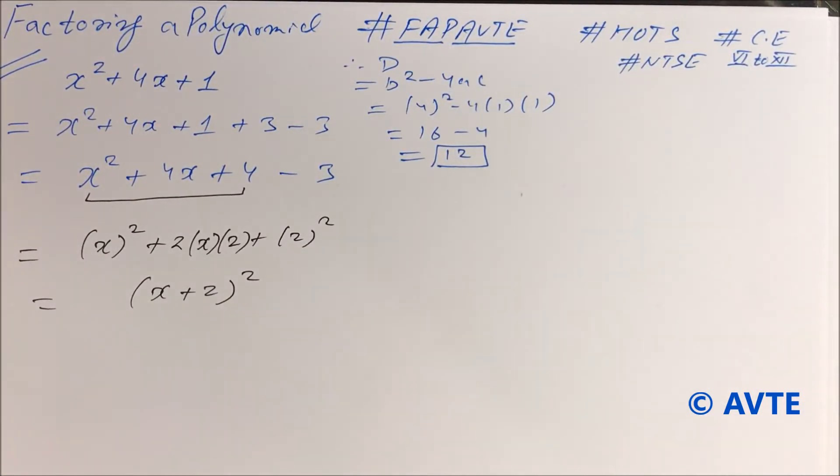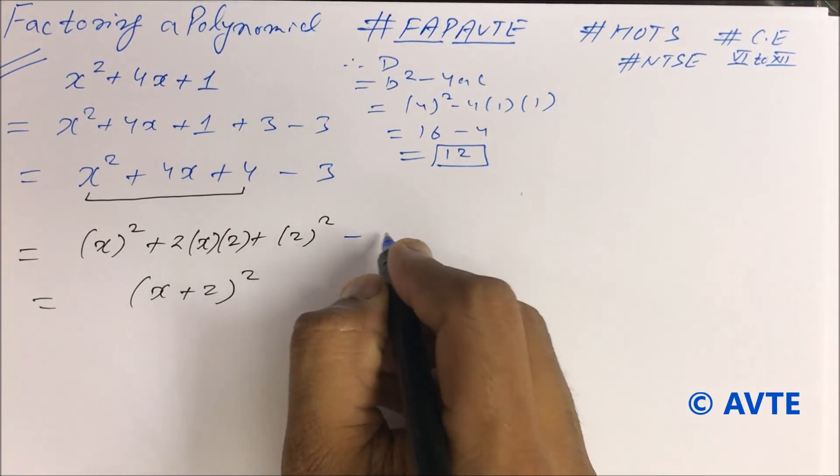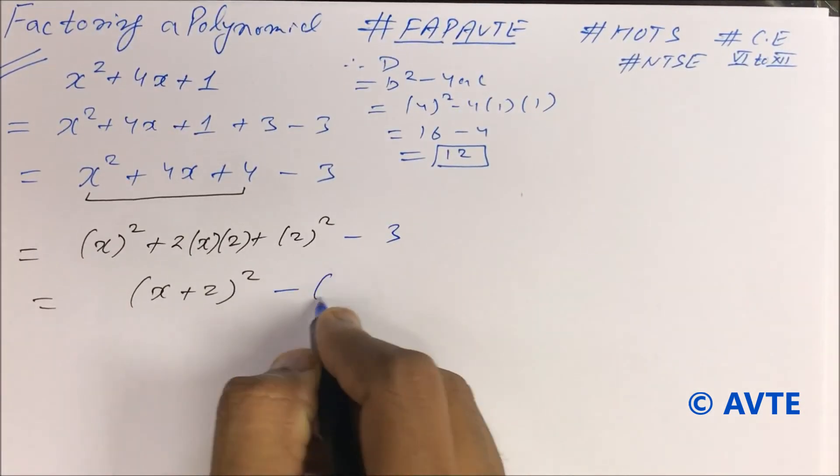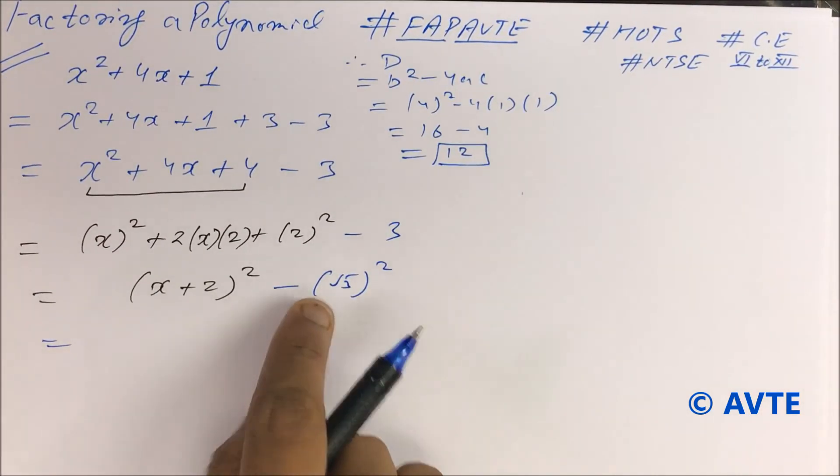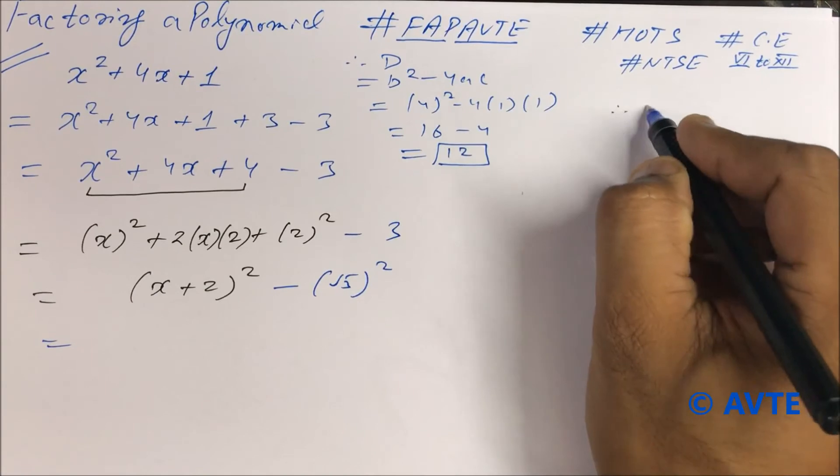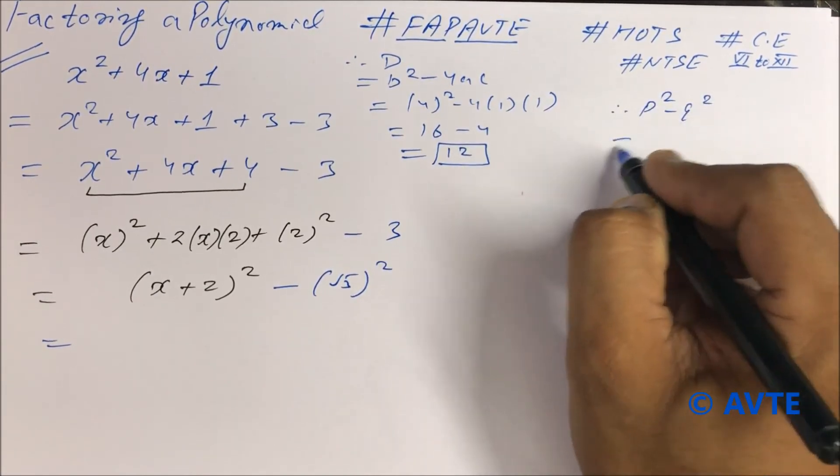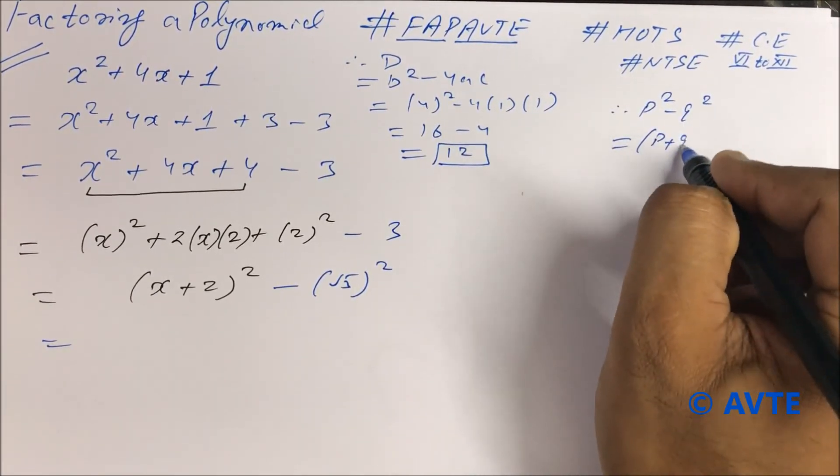So here it is minus 3. It can be written as root 3 square. So now it is p square minus q square, that is p plus q and p minus q.